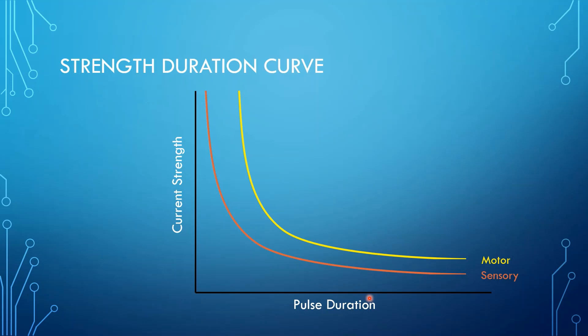In order to get a motor response, you just have to have a combination of pulse duration and current strength that crosses that motor strength duration curve. Typically, for a motor response, we're going to set our pulse duration a fair amount higher, so that when you increase the current strength, now we have a sensory response, and now we're able to get a motor response when we cross the motor curve. Note that any combination of strength and duration that crosses the motor curve will have first crossed the sensory curve. They're always going to feel it before you get a motor response.